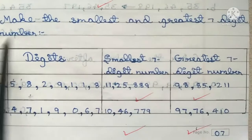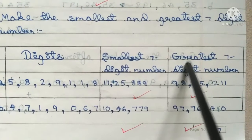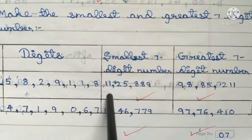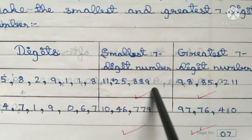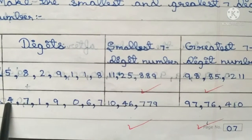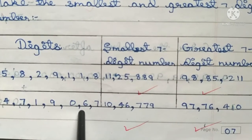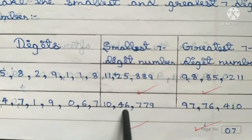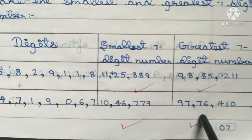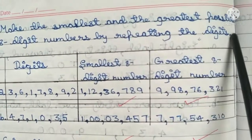Make the smallest and greatest 7-digit numbers using digits 5, 8, 2, 9, 1, 1, 8. Smallest 7-digit number: 11,25,889. Greatest 7-digit number: 98,85,211. Answer: 4 crore 47,19,067 and 10 lakh 46,779; greatest is 97,97,976,410.